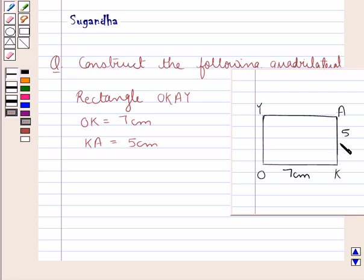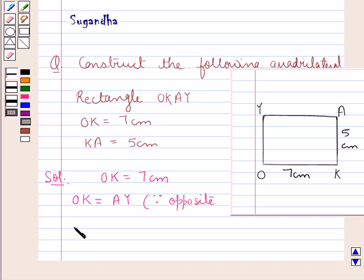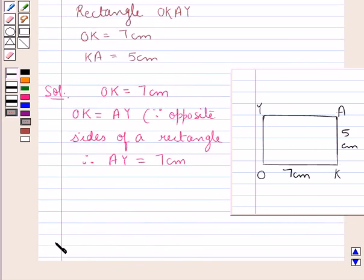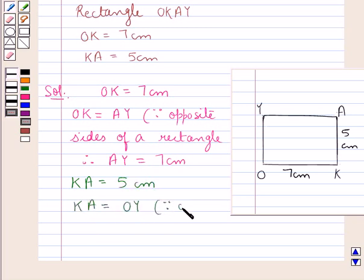Now let's move on to the solution. We are given that OK is 7 centimeters, and we know that OK is equal to AY since opposite sides of a rectangle are equal, so AY is equal to 7 centimeters. Similarly, KA is equal to 5 centimeters, and since KA equals OY as opposite sides of a rectangle are equal.